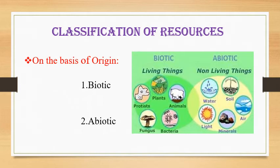Second type: abiotic resources. All non-living resources are known as abiotic resources. For example, land, water, minerals, etc. The abiotic resources are not renewable, except water which is inexhaustible. These resources are in great demand for the development of various industries and agriculture. Non-living things are very essential for development in infrastructure, agriculture, and other industries. In the given picture, you can see biotic resources — living things like plants, animals, bacteria, and fungus — and abiotic resources such as water, soil, air, minerals, and light.